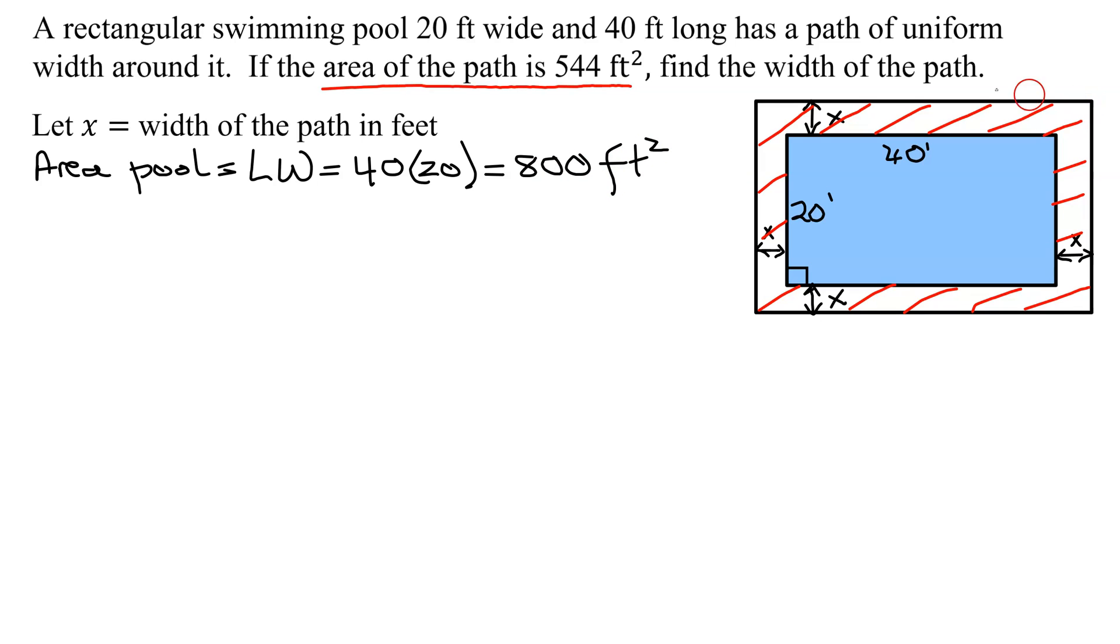Now I need to find the total area. So I need this length here. Well, it's the length of the pool plus x on the left and x on the right. So it's 40 plus x plus x, so it's just 40 plus 2x.